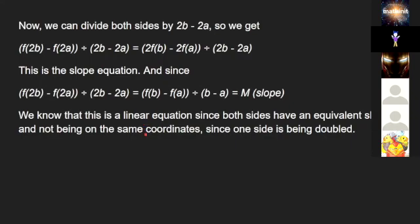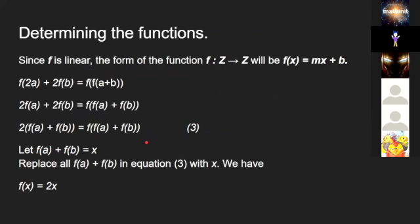Determining the functions. Since f is linear, the form of the function f: Z → Z will be f(x) = mx + b. Although we already have a b variable, so we cannot use b, and we're going to swap out the b variable for the letter n. So f(2a) + 2f(b) = f(f(a+b)).